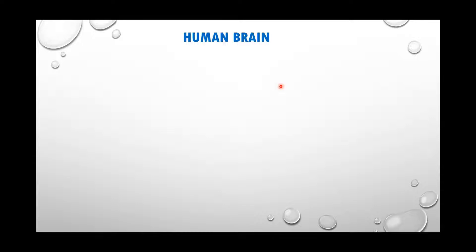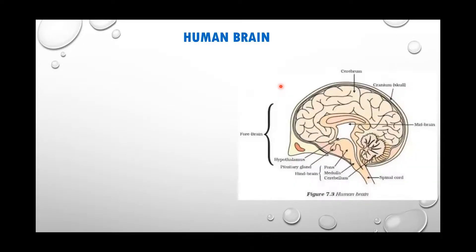The peripheral nervous system contains cranial nerves, whereas the central nervous system is our brain, which performs the complex mechanism of thinking.